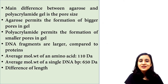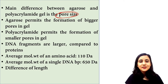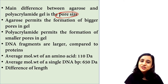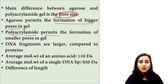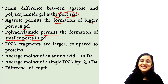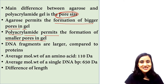The main difference between agarose gel and polyacrylamide gel is the difference in pore size due to structural differences. Agarose permits formation of bigger pores in the gel, whereas polyacrylamide permits formation of smaller pores. The second point is that protein size and length are both smaller compared to DNA.